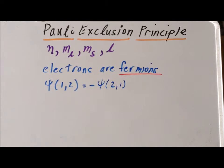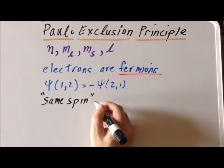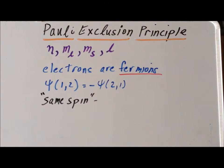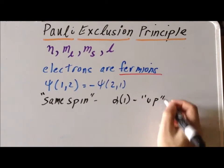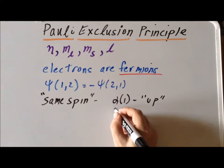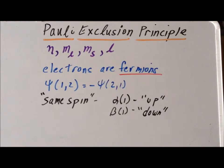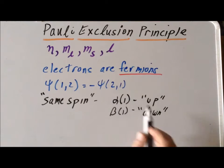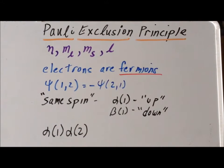Our first step is to make use of the principle that we have two electrons with the same spin. There are defined spin functions alpha and beta. For example, alpha of one means that electron one is spin-up, so it has an m_s of plus one half. Beta of one is equivalent to a spin-down electron, where m_s equals minus one half. An effective way to write a spin function for two electrons with the same spin is alpha of one, alpha of two, which tells us that both electrons one and two have an m_s of plus one half.